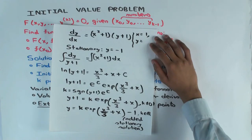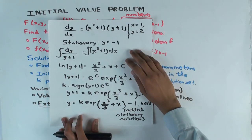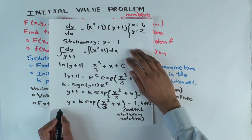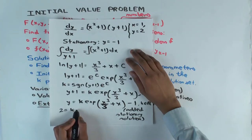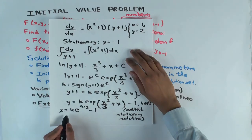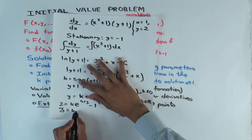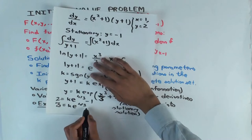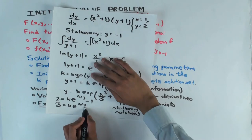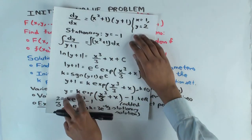When x is one, y is two, so you plug in: 2 = K · e^(4/3) − 1, which gives K = 3 · e^(−4/3). Now plug this value of K back into the general solution. You get y = 3 · exp(x³/3 − 4/3 + x) − 1.